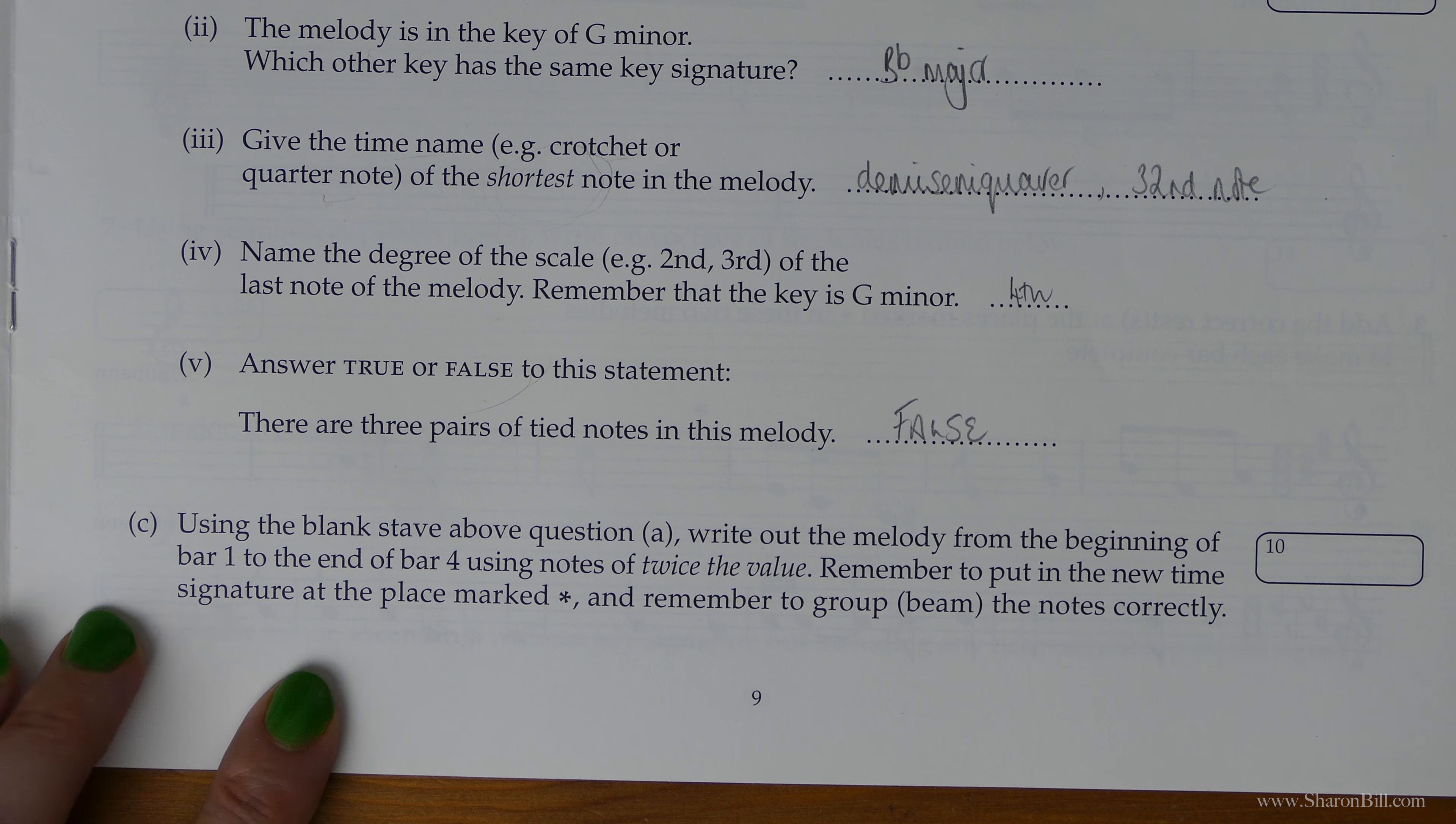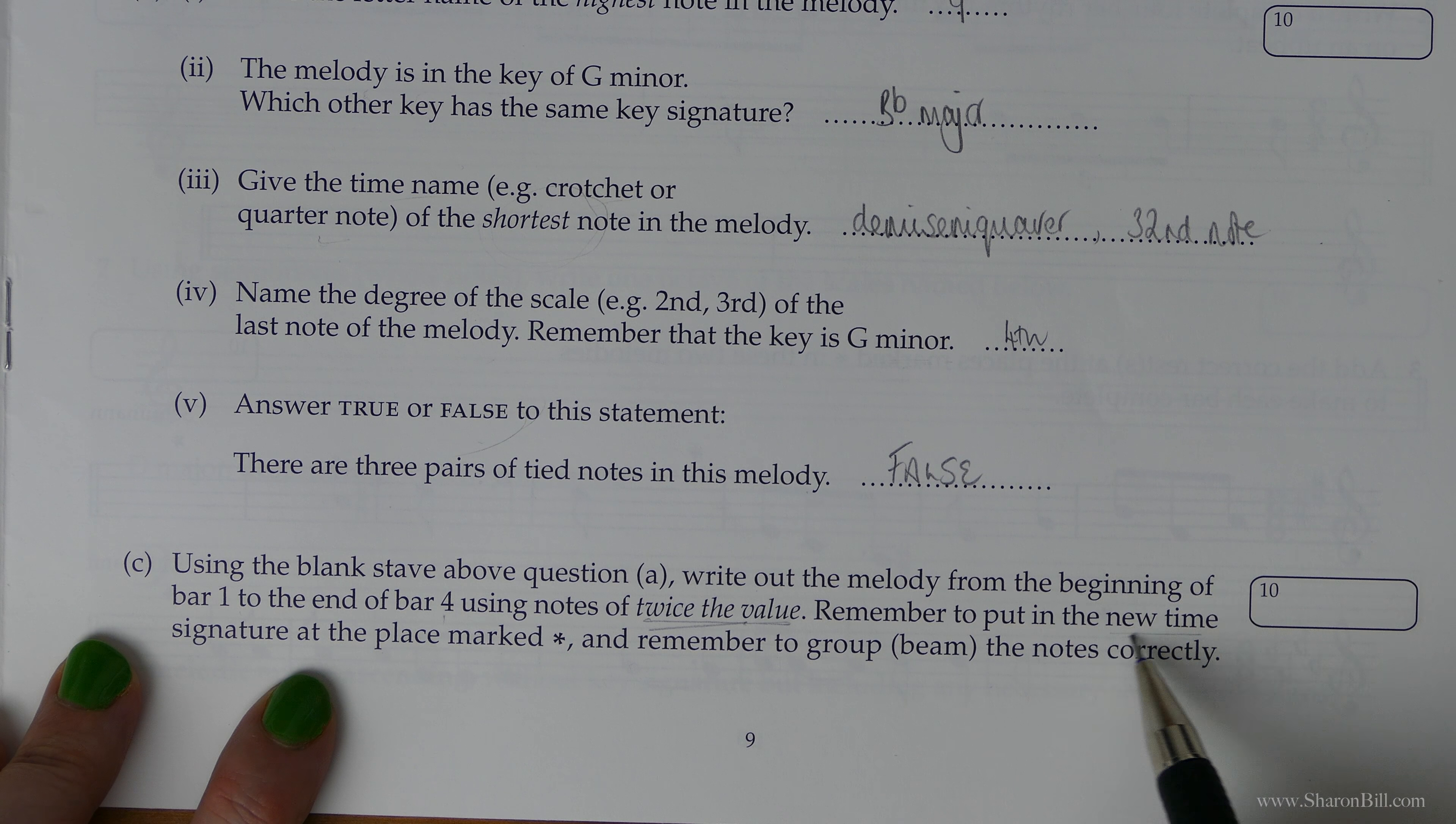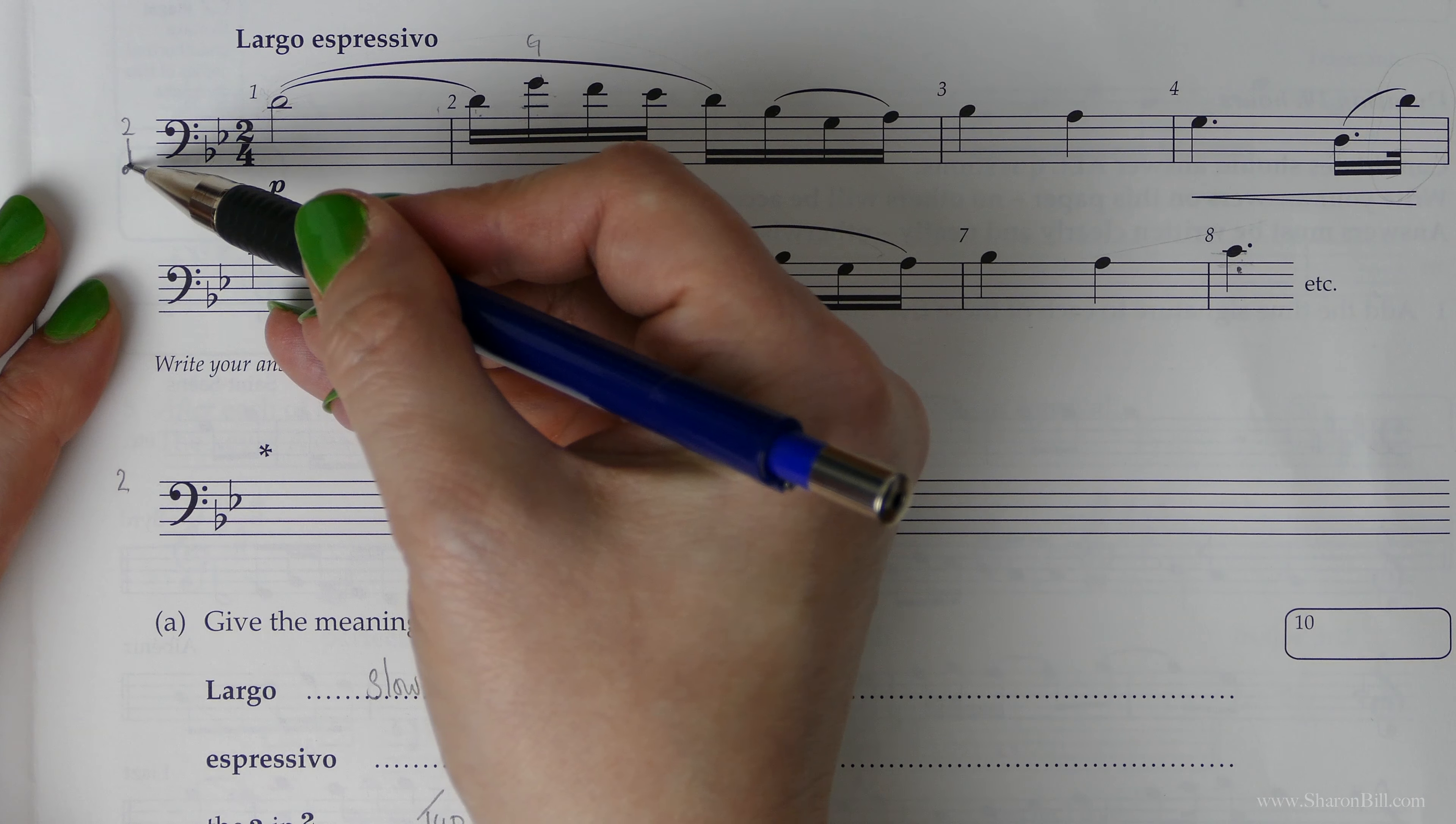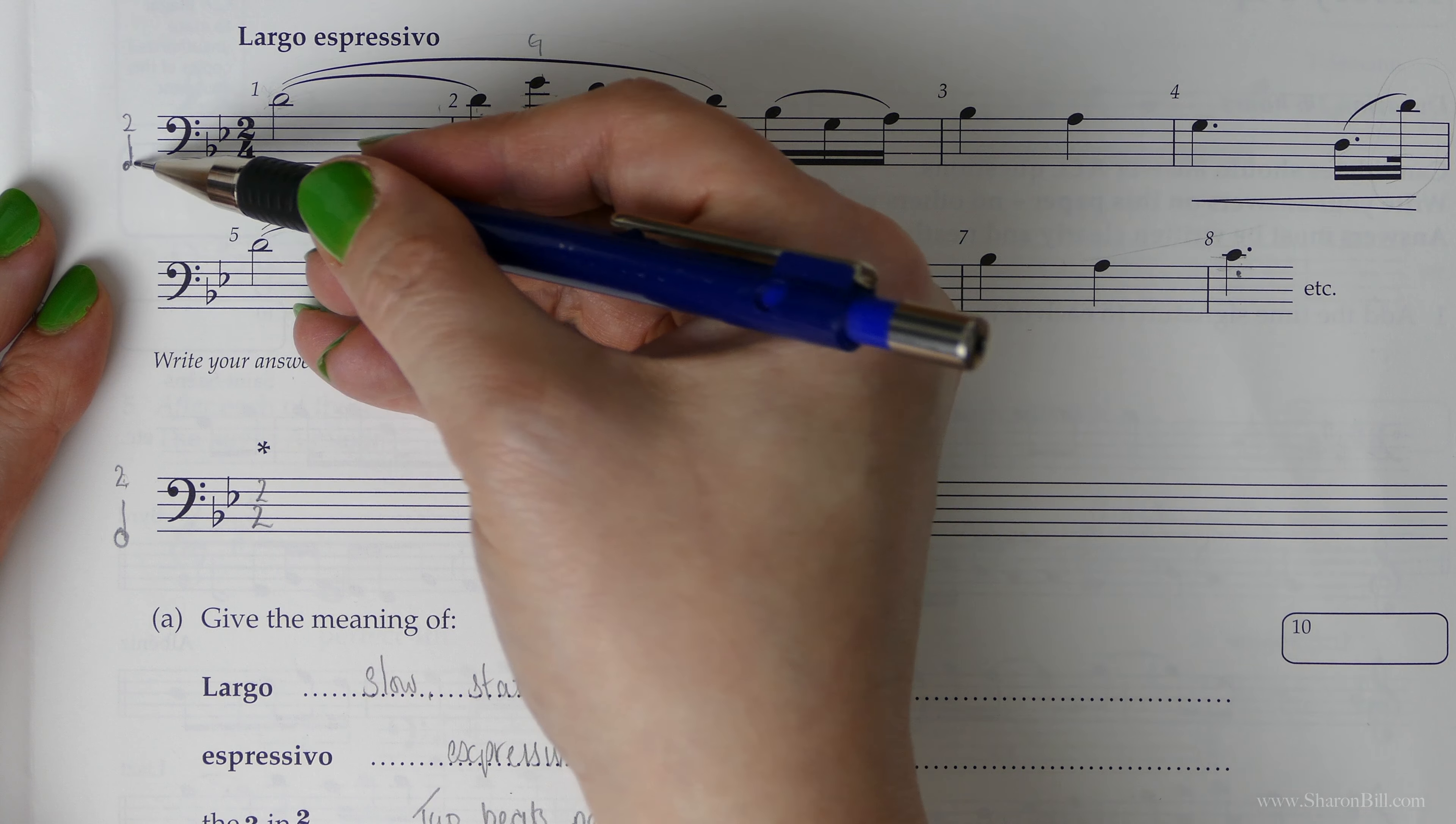This next question: using the blank stave above, so they've conveniently placed the stave here so we can easily refer to the extract, we need to write out the melody from the beginning of bar one to the end of bar four, but we've got to use notes of twice the value. So we've got to put in a new time signature and then beam the notes correctly to be in line with this new time signature. At the moment we're in two over four, which is two crotchets or two quarter notes. We need to stay in two—we've always got to stay in duple time—but to double we go from crotchets or quarter notes to minims or half notes. So that will be our new time signature: instead of two over four, it'll be two over two because it's two half notes. You don't change the top number, we need to stay in duple time. We change the bottom number.